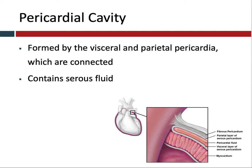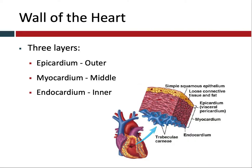Now let's talk about the layers of the wall of the heart itself. There are three layers that make up the wall of the heart. You have the epicardium, which is the outer layer — the epicardium is the visceral layer of the serous pericardium. You have the endocardium, which is the inner layer. And then in the middle you have the myocardium, and as we recall from the start of this screencast, myo means muscle.